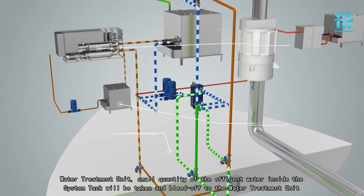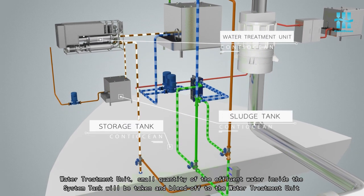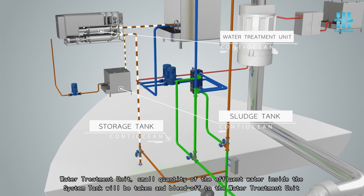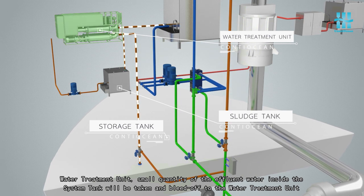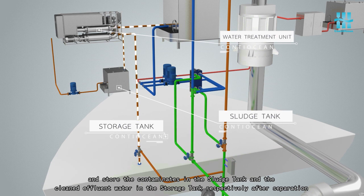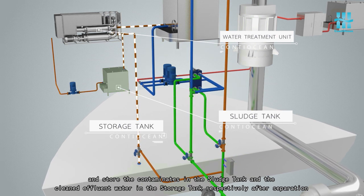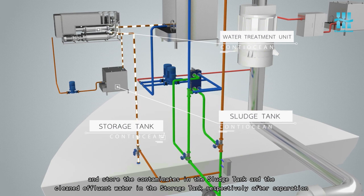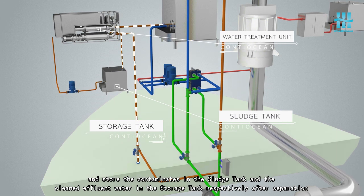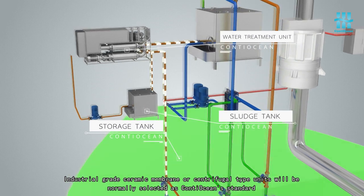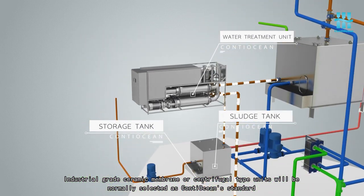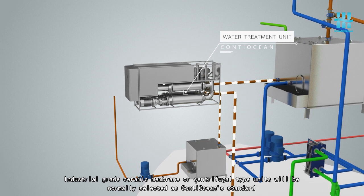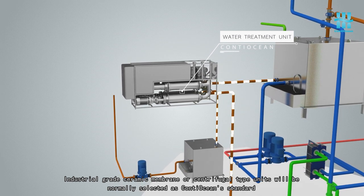Water treatment unit. Small quantity of the effluent water inside the system tank will be taken and bleed off to the water treatment unit and store the contaminates in the sludge tank and the cleaned effluent water in the storage tank respectively after separation. Industrial grade ceramic membrane or centrifugal type units will be normally selected as continuation standards.